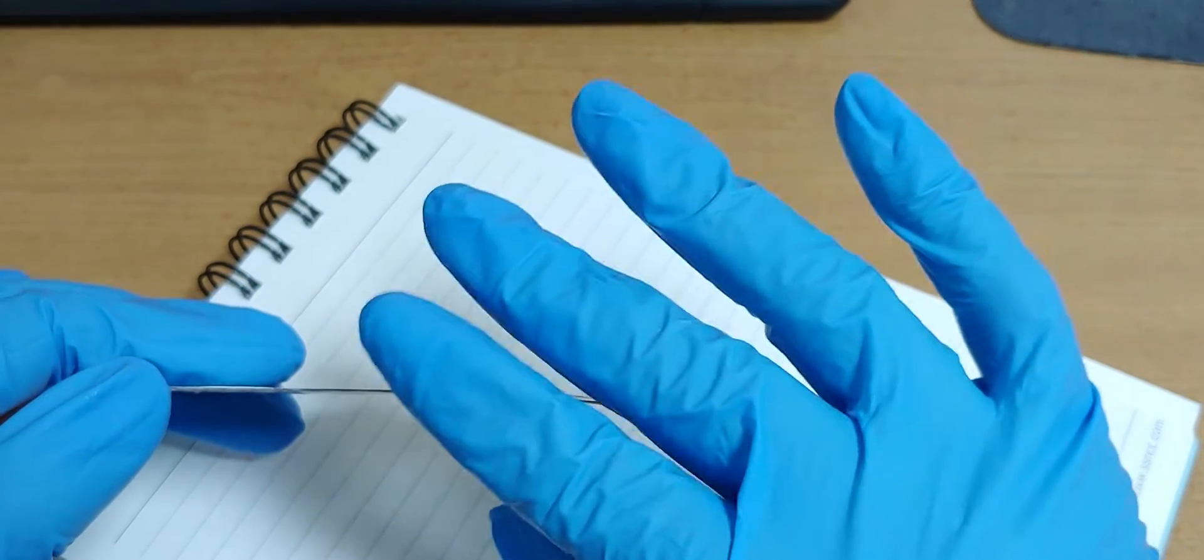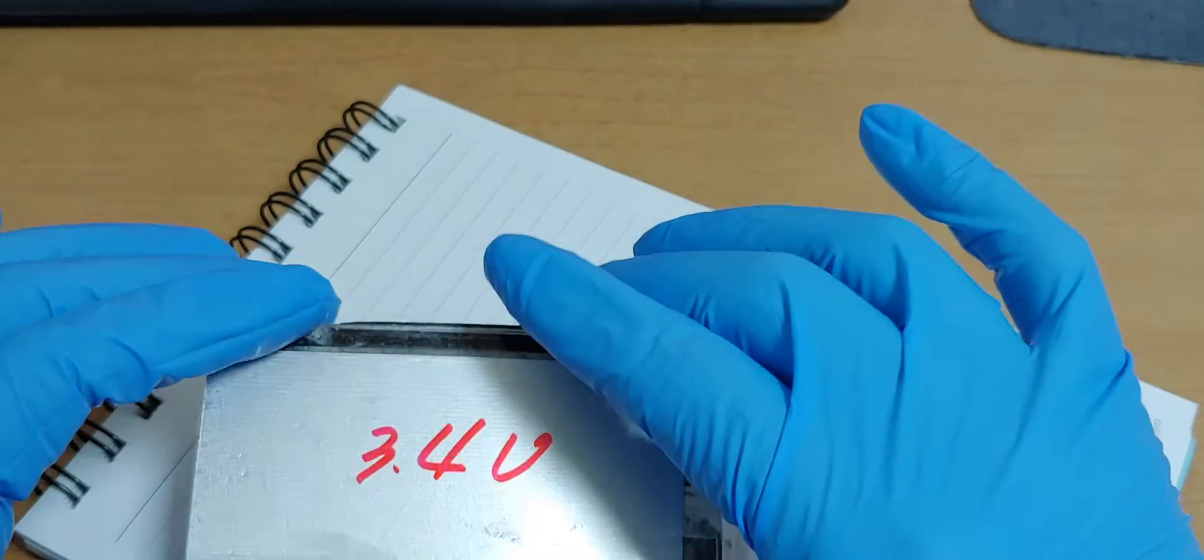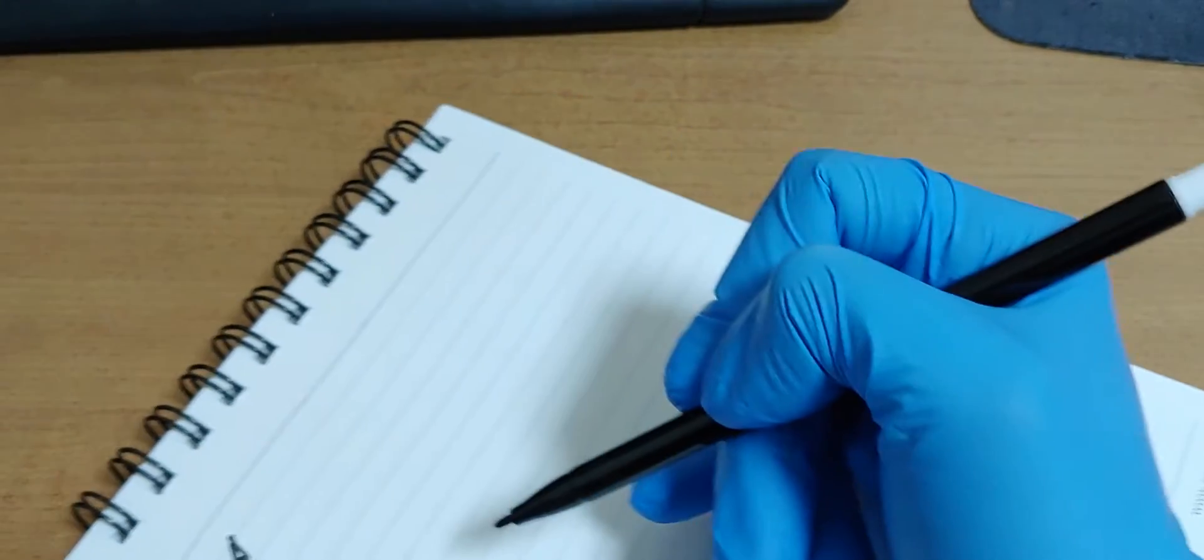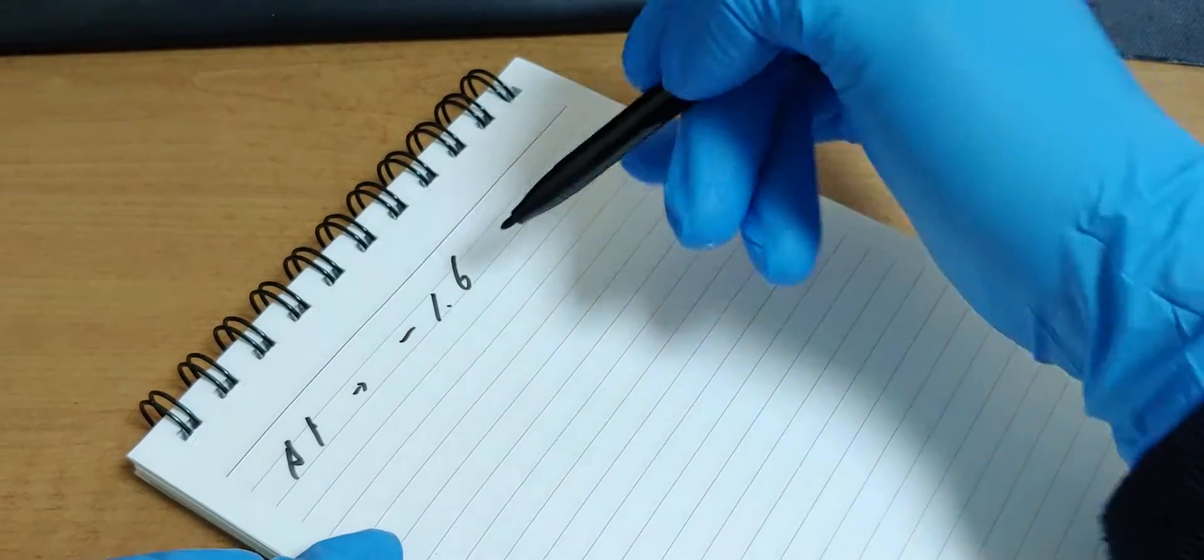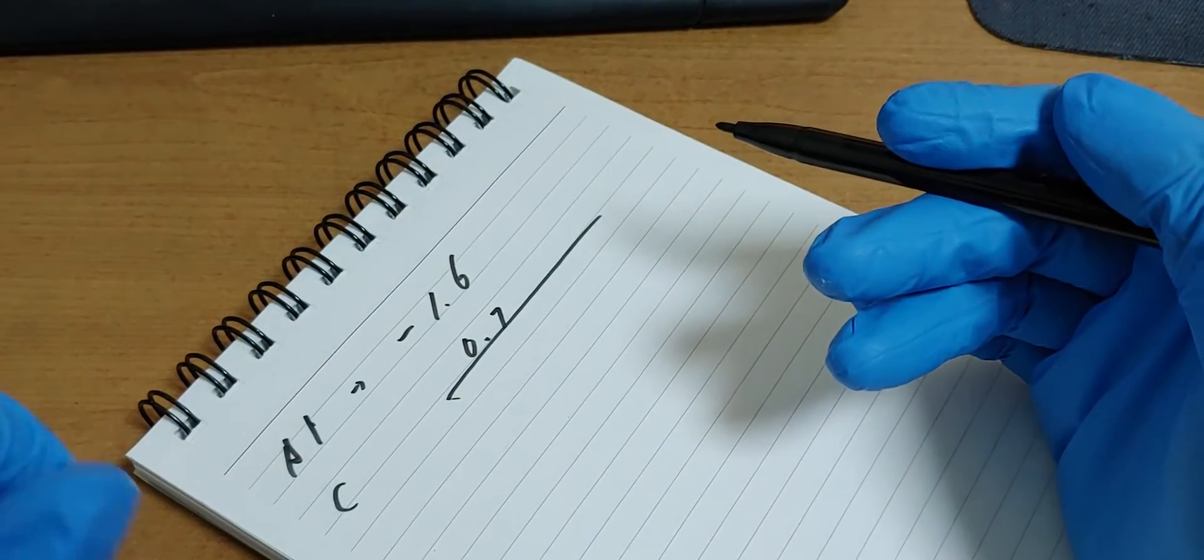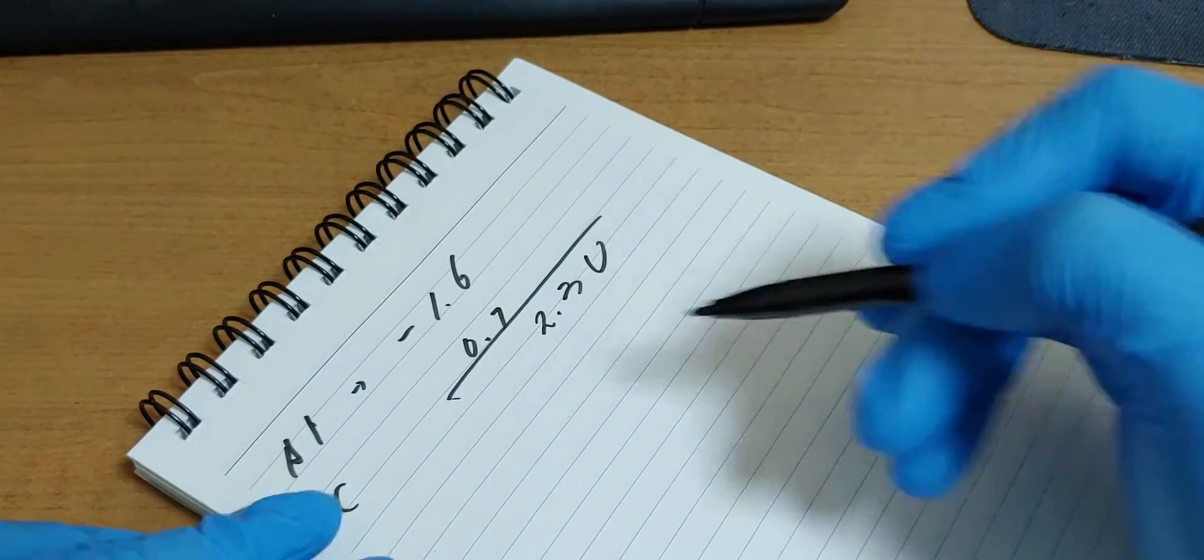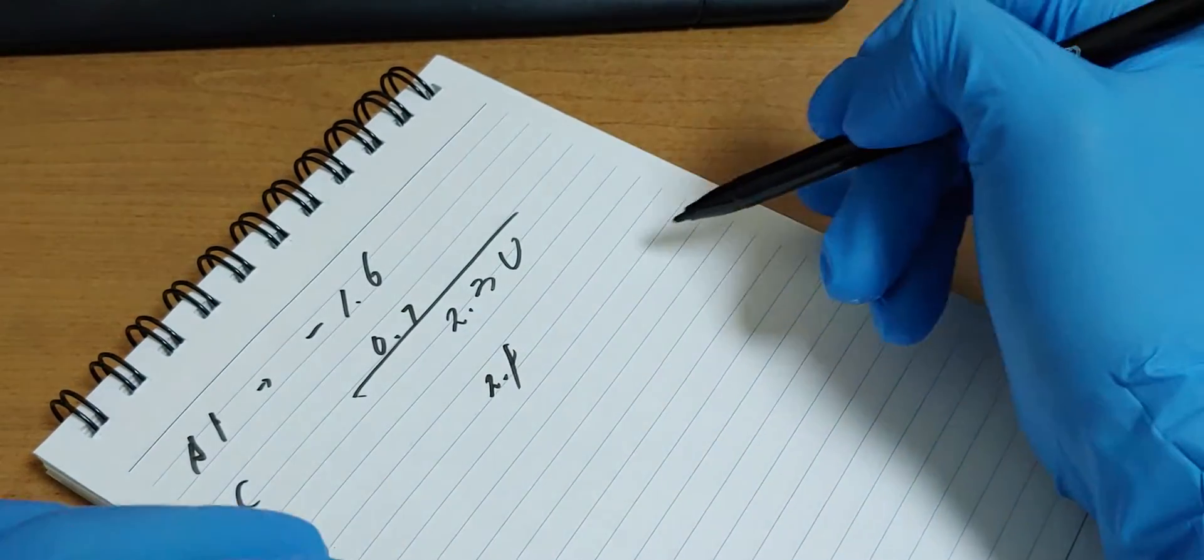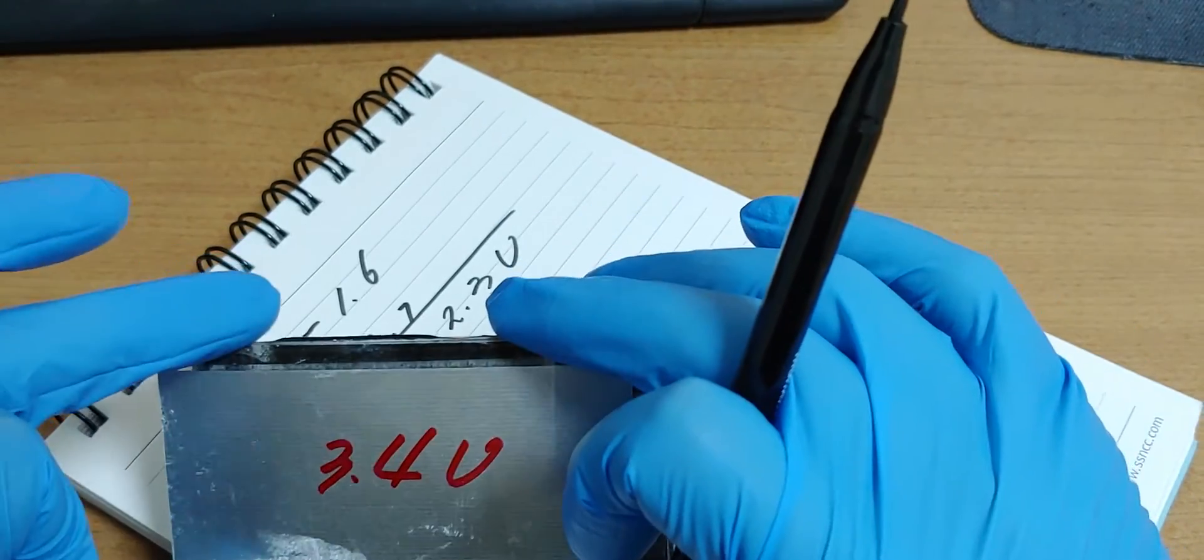For a long time, I tried to make a rechargeable aluminum battery, but 3.4V means different one. For example, if we use aluminum, aluminum is minus 1.6V and carbon is 0.7V. It means we can make 2.3V or 2.4V maximum. But usually, my battery was over 2.9V, sometimes 3.1V. But this was 3.4V, so I was very surprised.